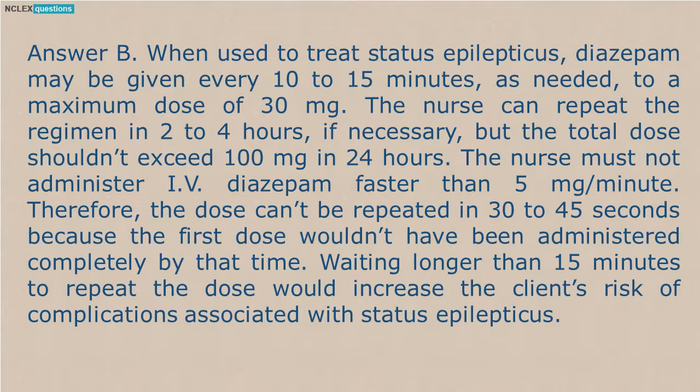Answer B. When used to treat status epilepticus, diazepam may be given every 10 to 15 minutes, as needed, to a maximum dose of 30 mg. The nurse can repeat the regimen in 2 to 4 hours if necessary, but the total dose shouldn't exceed 100 mg in 24 hours. The nurse must not administer IV diazepam faster than 5 mg/minute. Therefore, the dose can't be repeated in 30 to 45 seconds. Waiting longer than 15 minutes to repeat the dose will increase the client's risk of complications associated with status epilepticus.